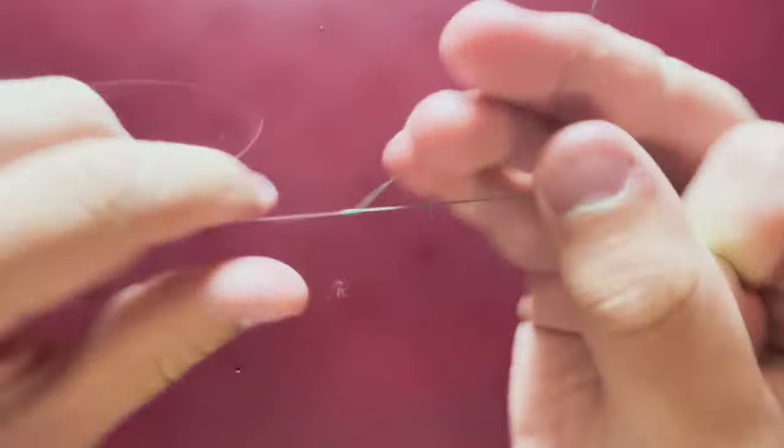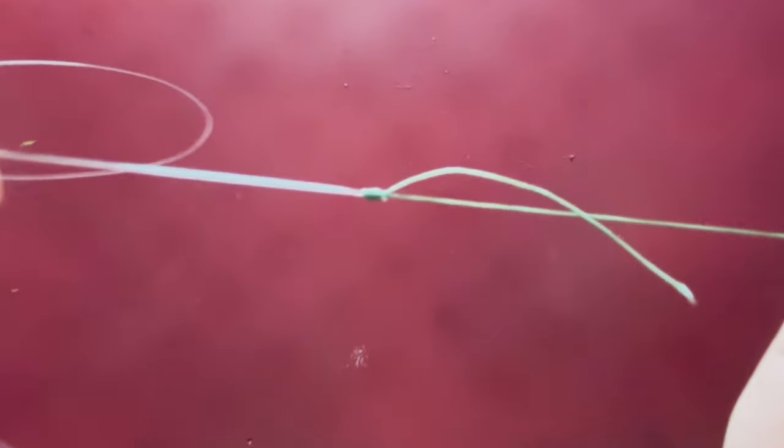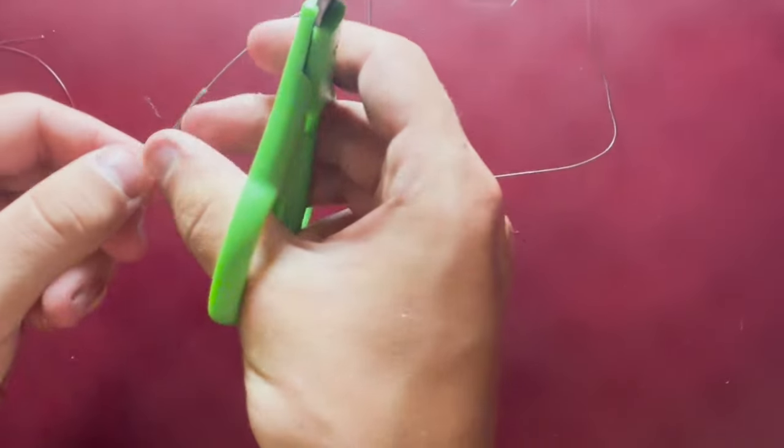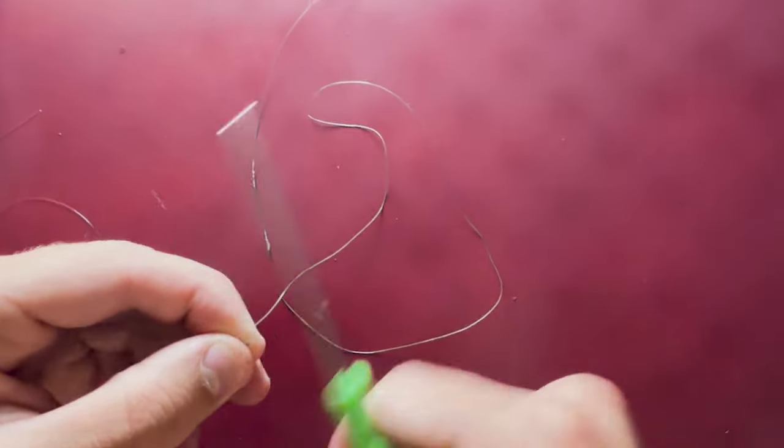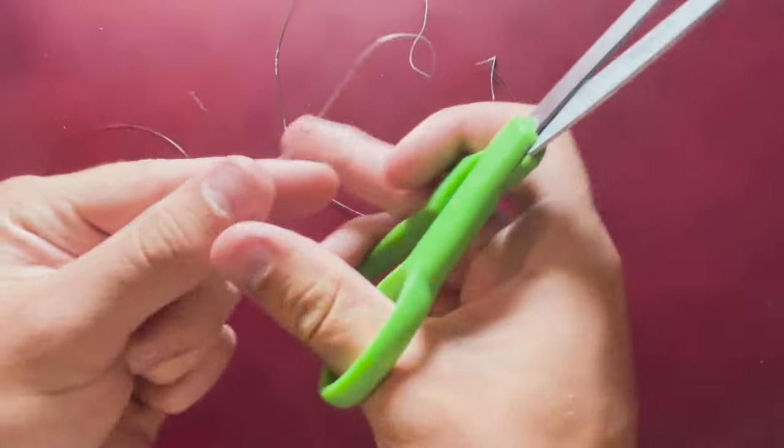As you see right here, the knot clinches down on itself. It's barely even visible, extremely small. Then you just take your scissors, your braid cutters, or your pliers that have scissors on them and simply cut off the extra tag ends.